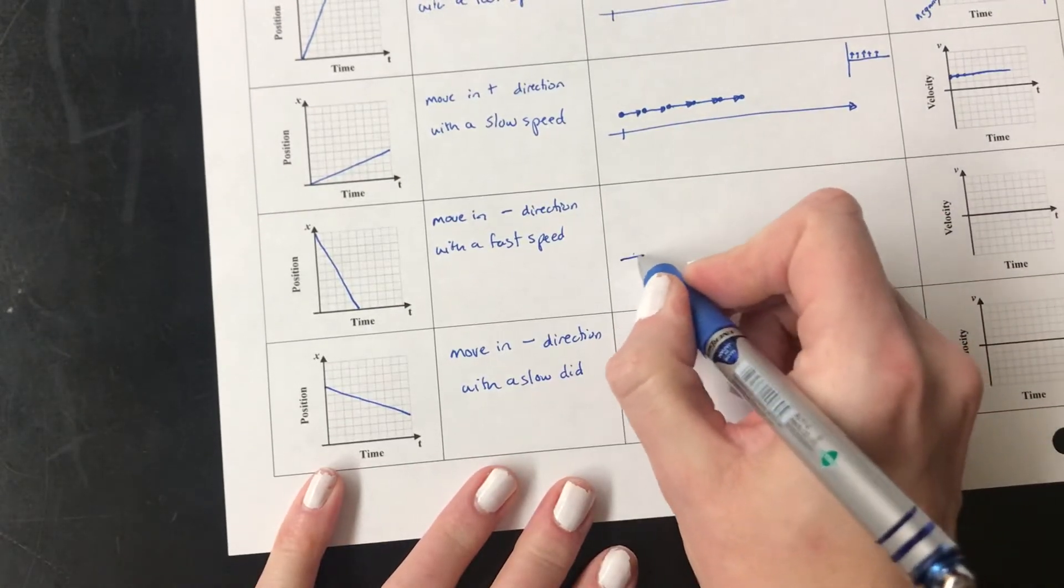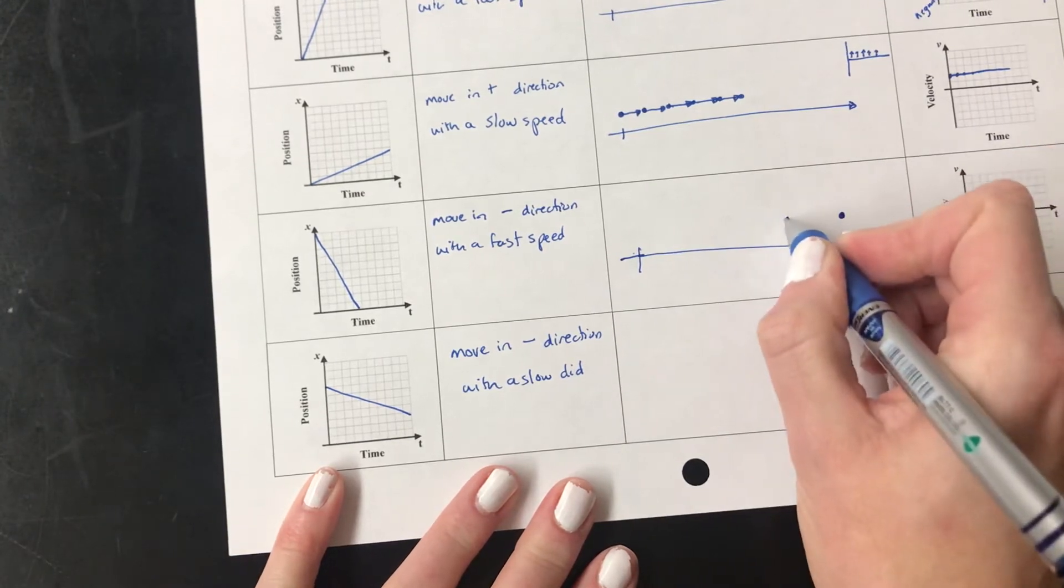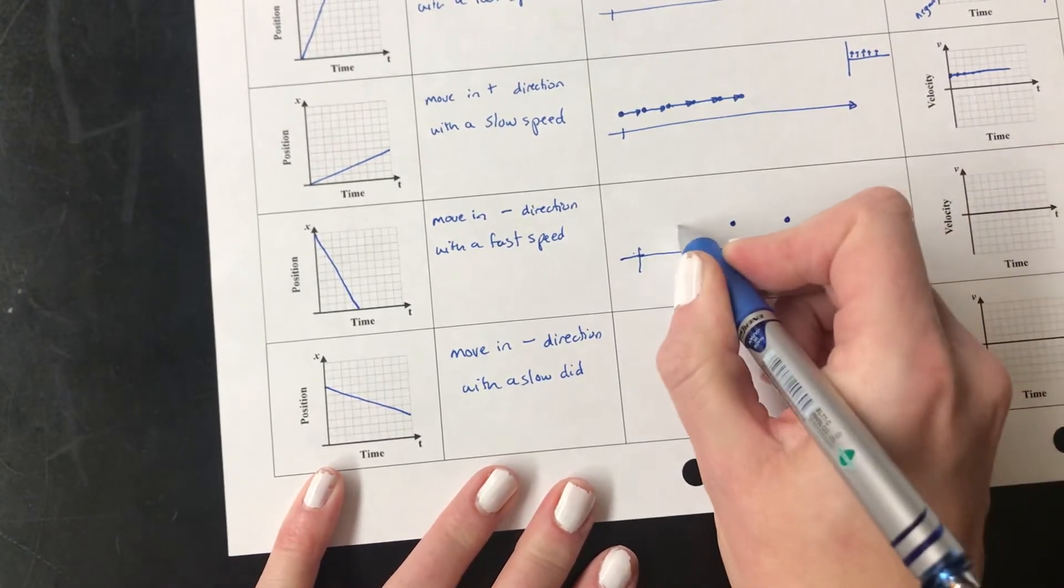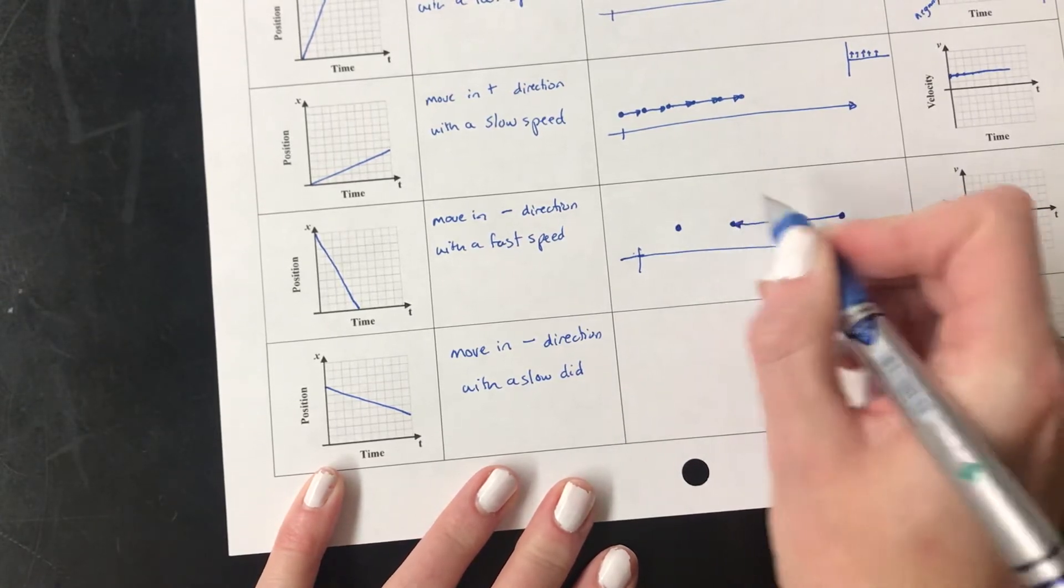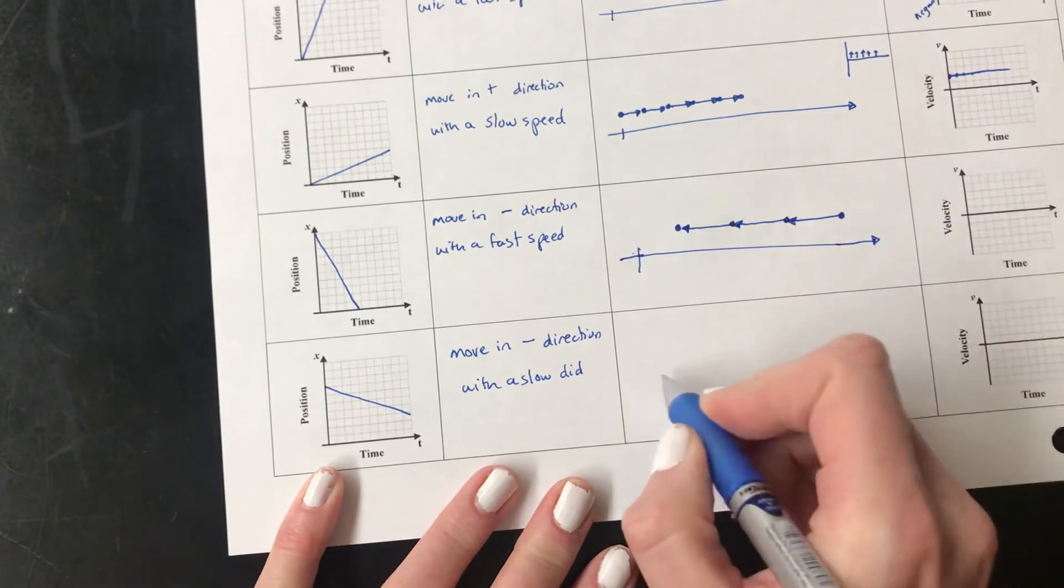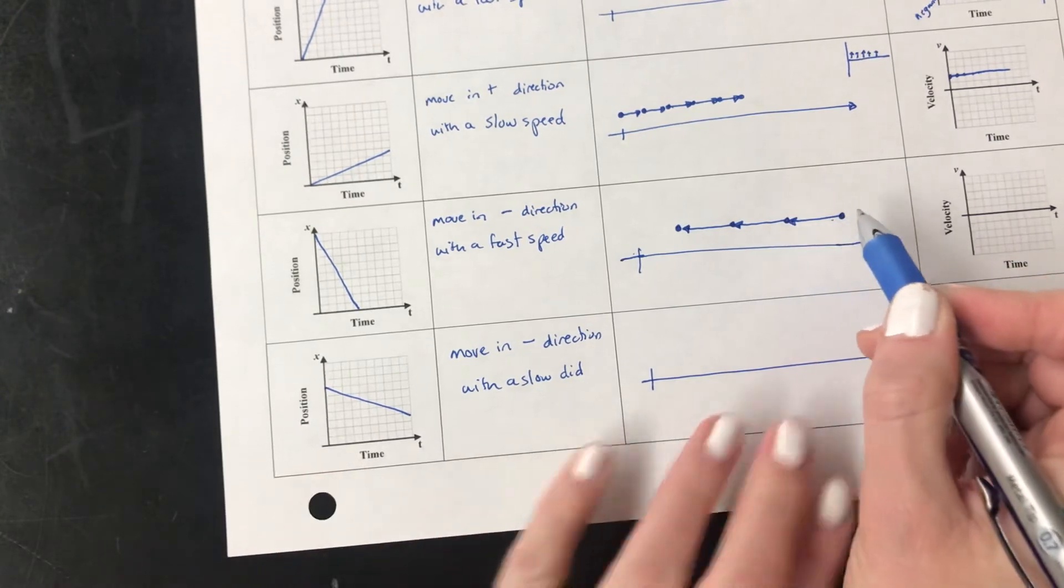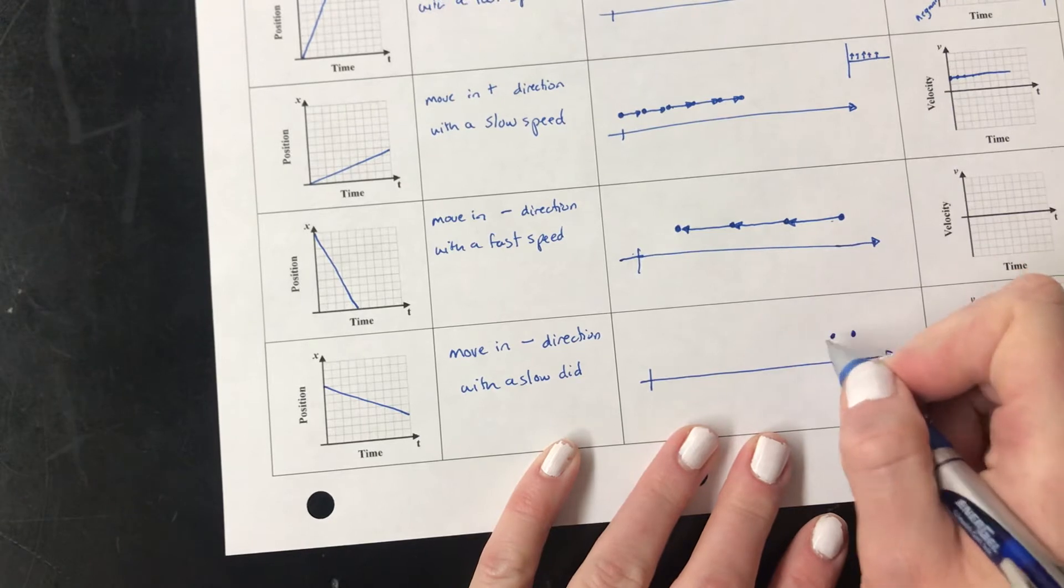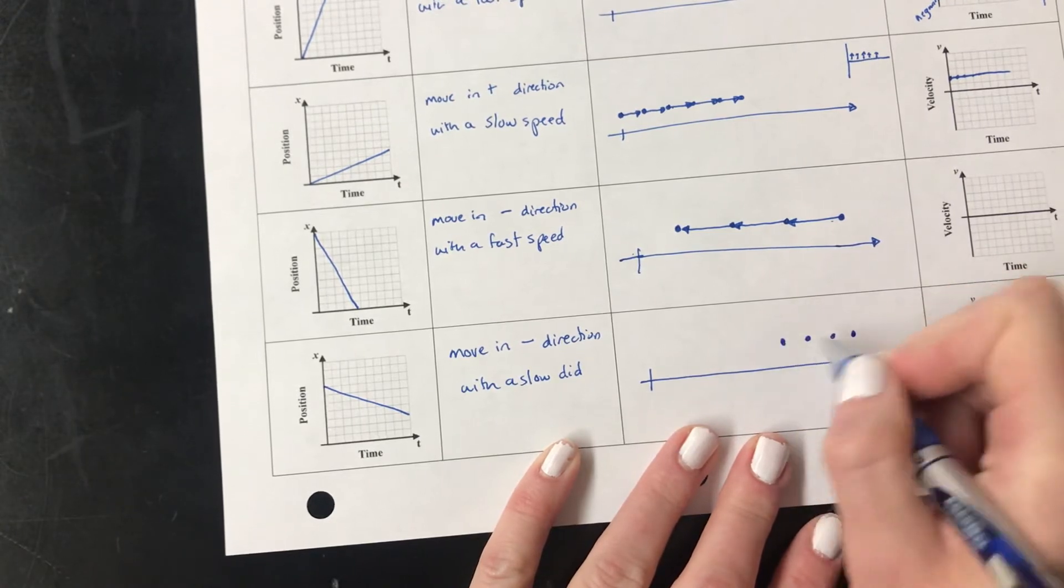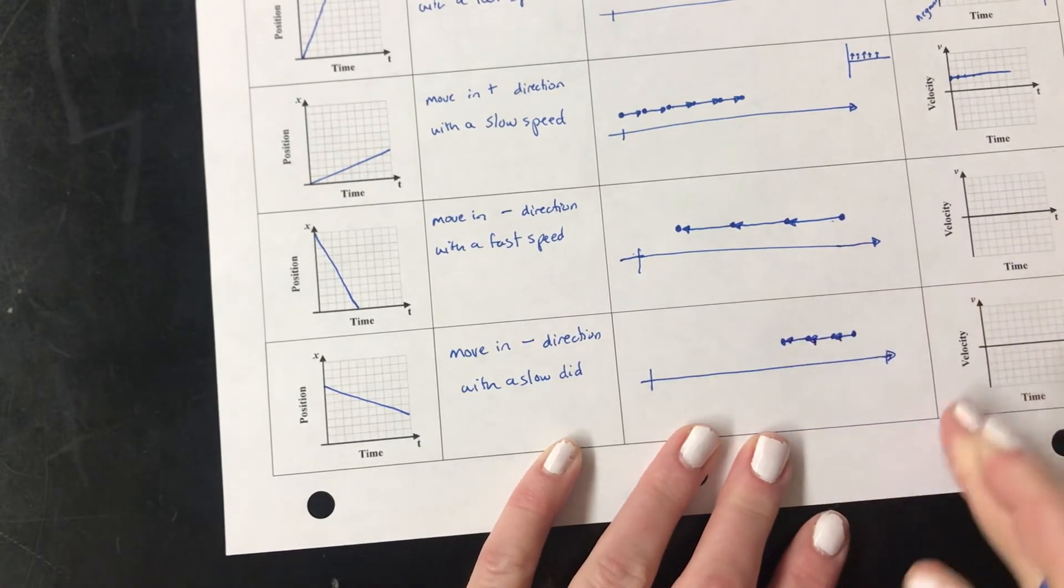On my motion diagram this time my arrows are going to point in the other direction because it's going in the negative direction. So my arrows are going to point to the left. They point to the right when it's positive. They point to the left when it's negative. They're long because it's fast and they're all the same because it's constant. And down here my dots are closer together because it's not going as far each second. And my arrows are shorter but they are again all the same.